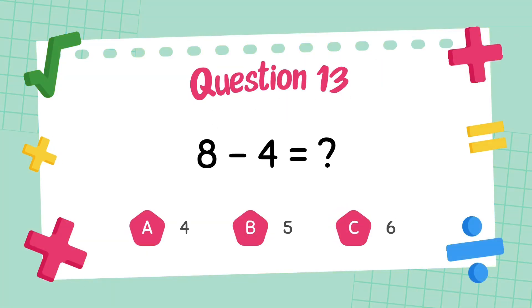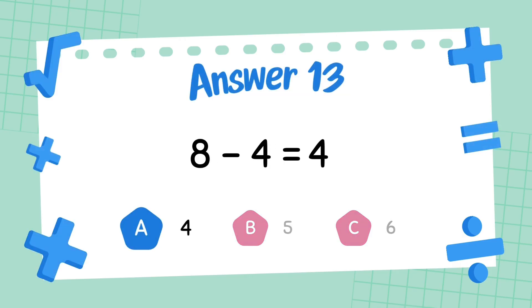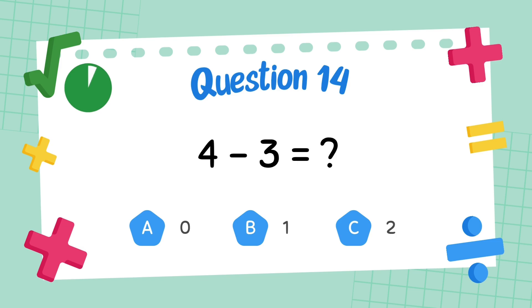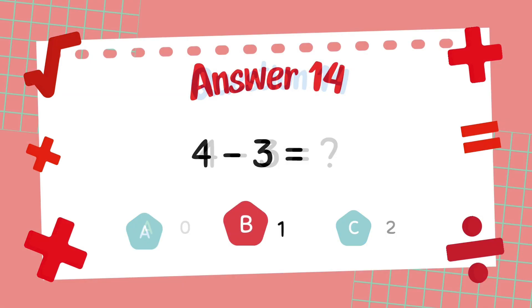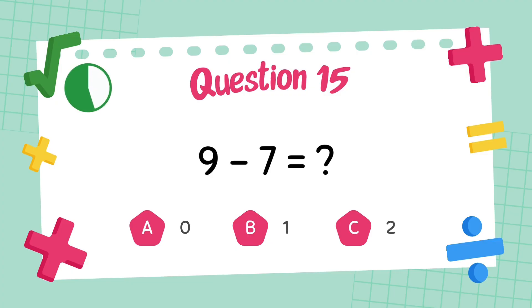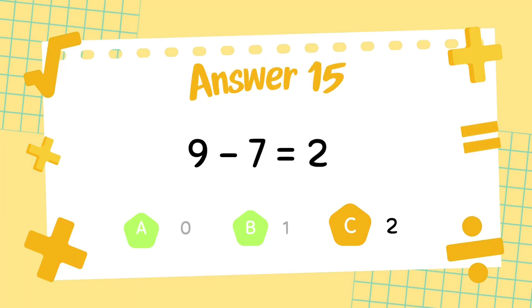What is eight minus four? The answer is four. What is four minus three? The answer is one. What is nine minus seven? The answer is two.